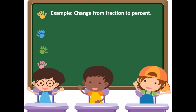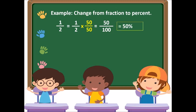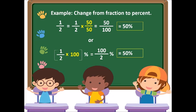Example: change from fraction to percent. Let's say one-half. We multiply by 50 over 50 to get 50 over 100, so 50 over 100 equals 50%. Alternatively, we multiply 100 by one-half: 100 over 2 equals 50. Put the percent sign, so it's 50%.